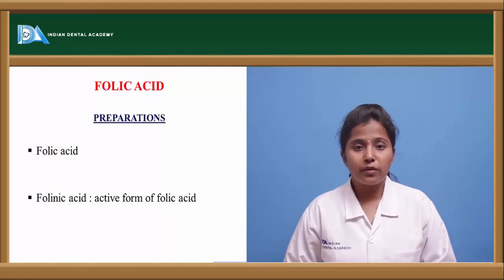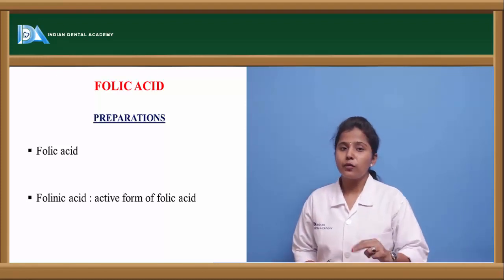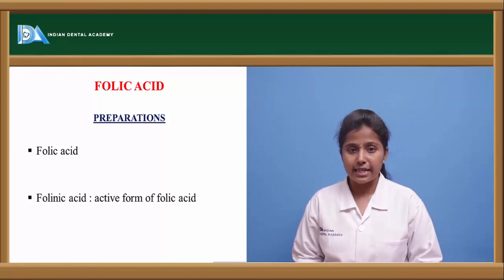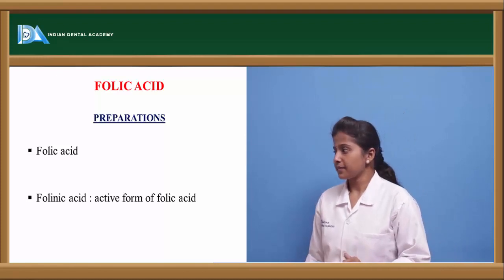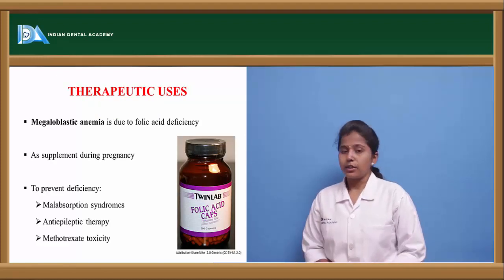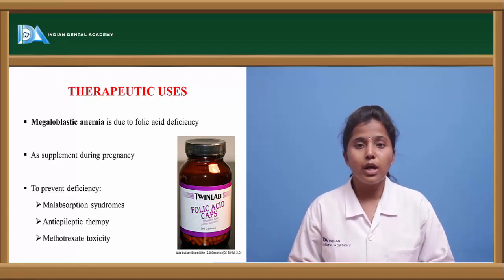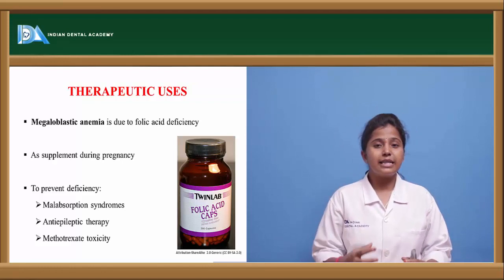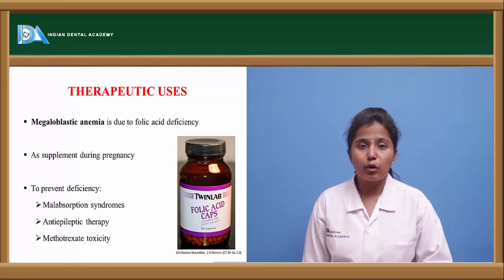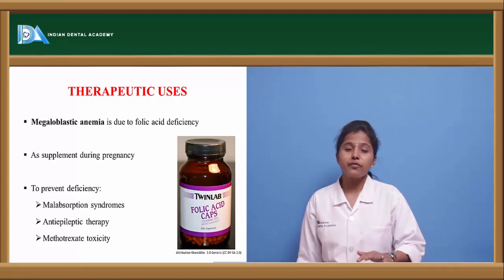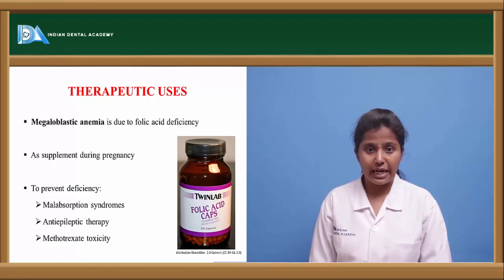Let us see the other hematinics compound, that is folic acid. Folic acid is prepared in two forms: folic acid and folinic acid. Folinic acid is the active form of folic acid. Folic acid is a major compound very useful in the formation of blood. If there is any deficiency of folic acid, it causes various types of anemia, and folic acid preparations are given as supplements.